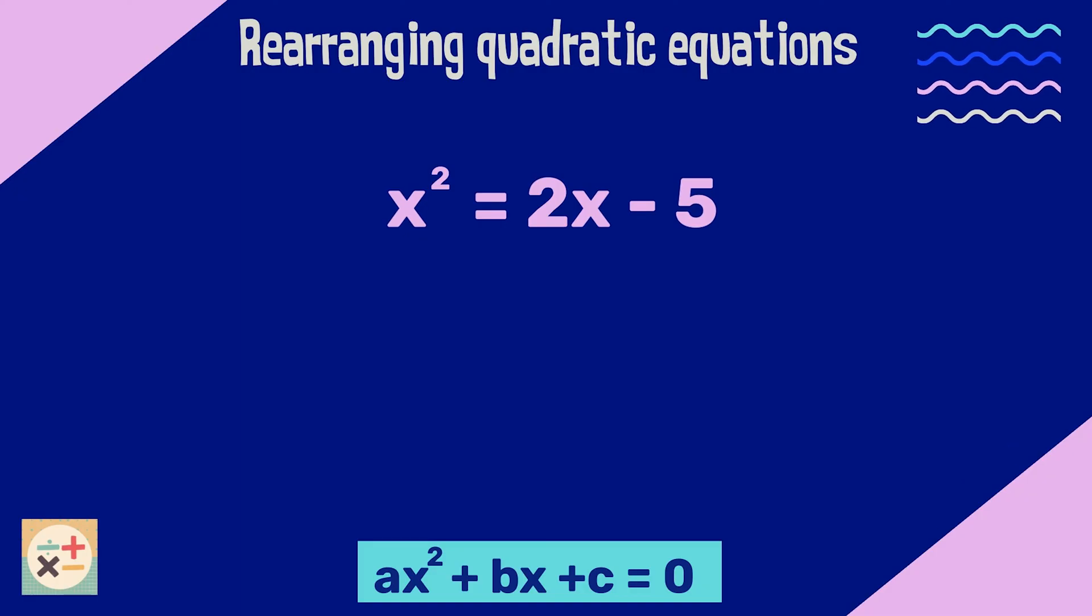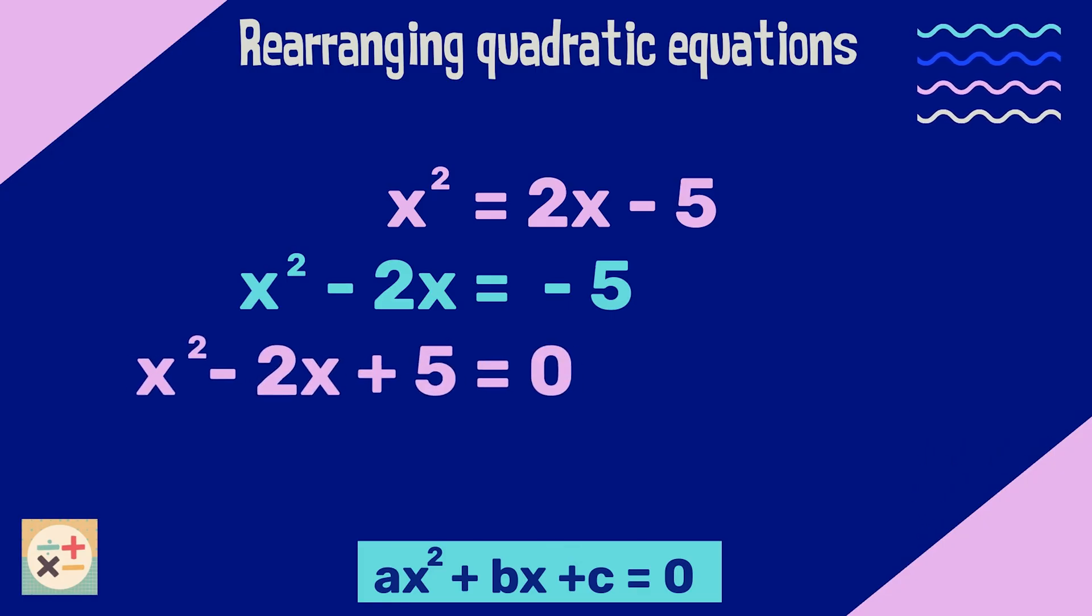Have a look at this quadratic equation. We need to move all the terms to the left hand side meaning it will be equal to zero. Remember when moving the terms across the equals sign we change the sign. So 2x becomes minus 2x, and minus 5 becomes a positive 5. Now that the quadratic equation is in its standard form, we can identify each of the terms.